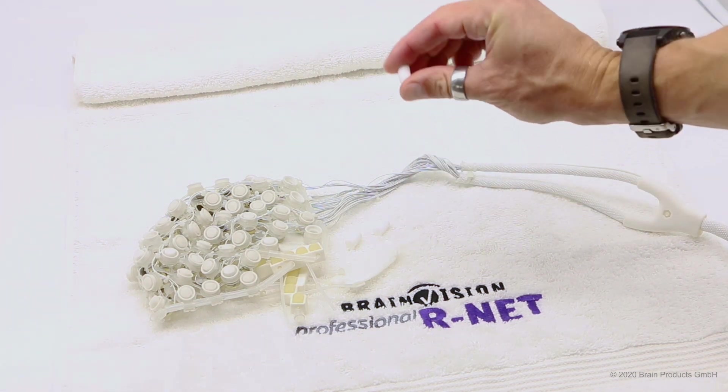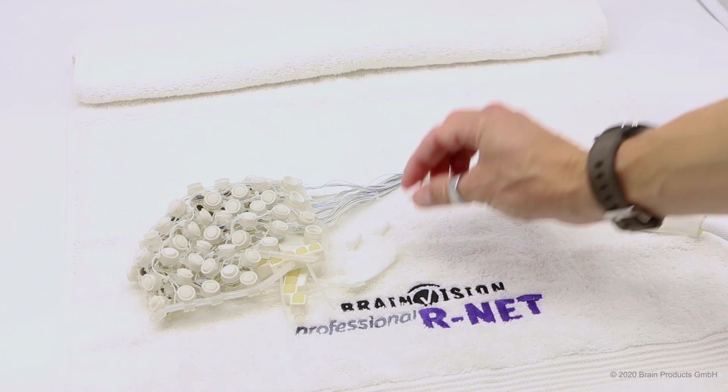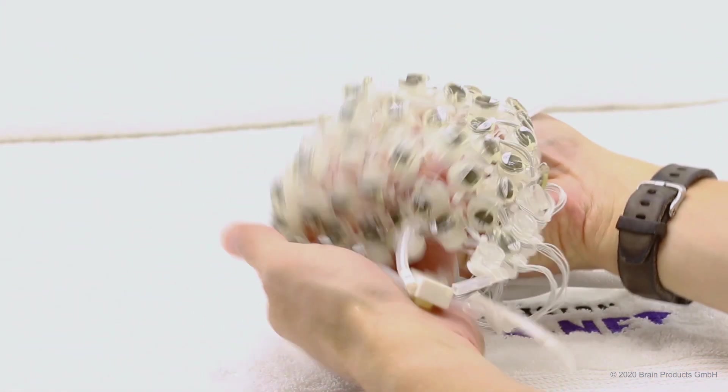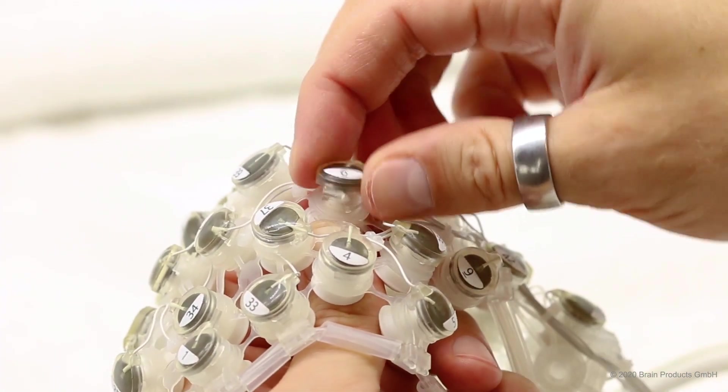Squeeze the new sponge between your fingers to make it shapeable. Revert the R-Net, grab the electrode holder from below, and twist the electrode counterclockwise to remove it from the holder.